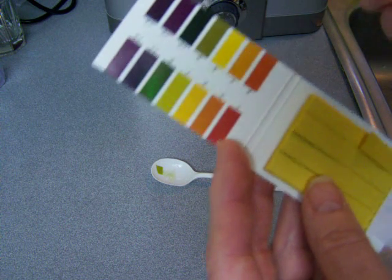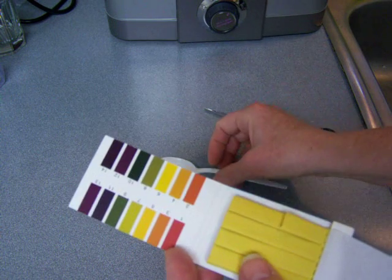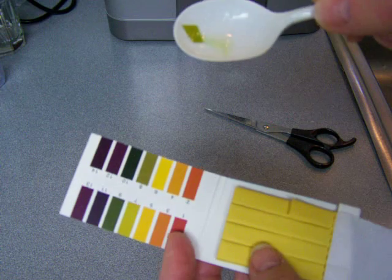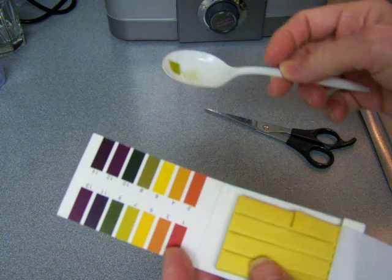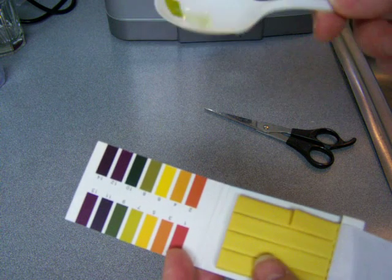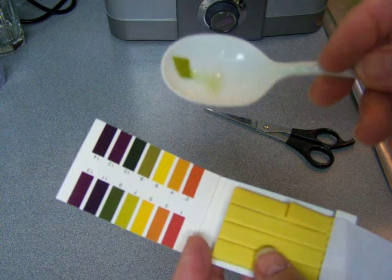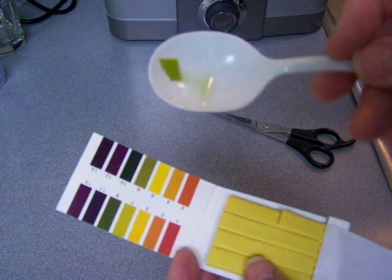We need to alkalize our bodies and 7.5 is slightly alkaline. Neutral is 7. So 7.5 on a scale of 1 to 14, 7.5 is slightly alkaline and that is perfect.